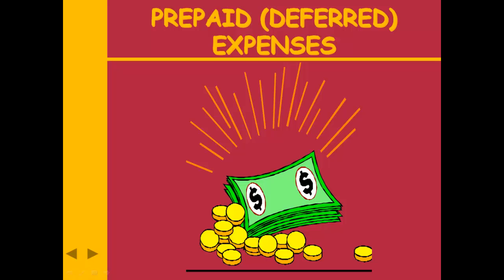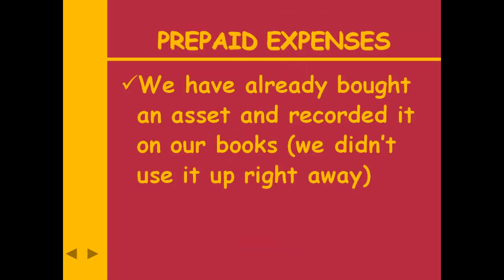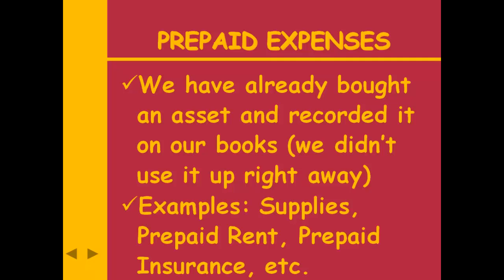Let's talk about our first type of adjusting entry, which deals with prepaid or deferred expenses. This is where I have paid for something in advance and haven't used it up yet. The most common examples are supplies, prepaid rent, and prepaid insurance.